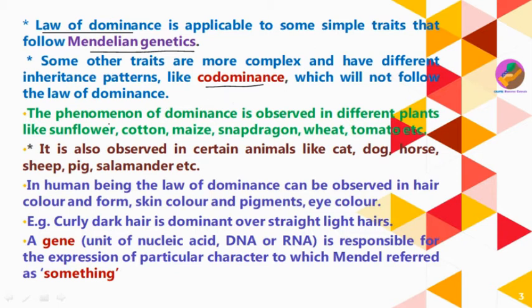Dominance can be observed in different types of plants such as sunflower, cotton, maize, snapdragon, wheat, tomato, and many others. Many botanists after Mendel's discovery tested the Law of Dominance on all these plants and found such phenomena in all of them — so the Law of Dominance is shown by all these plants.